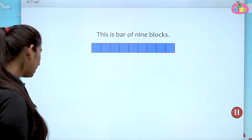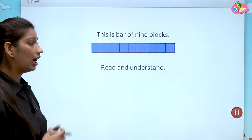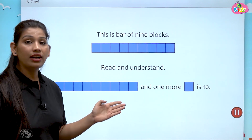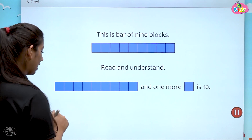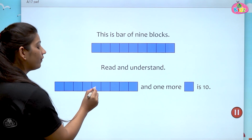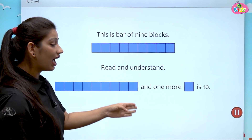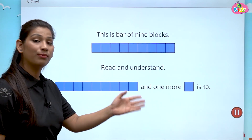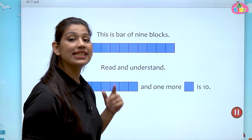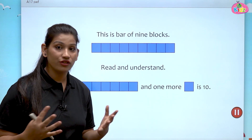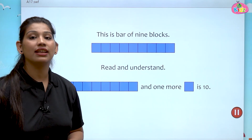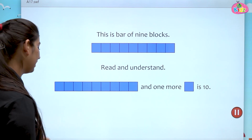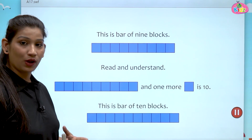How can we make a 10? This bar had 9 blocks. Let us count one more time: 1, 2, 3, 4, 5, 6, 7, 8, 9 — and 1 more is 10! You can see one more block has been added. 9 and 1 more is 10.